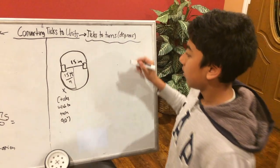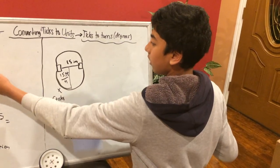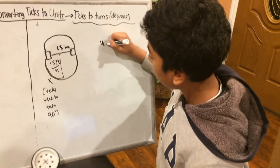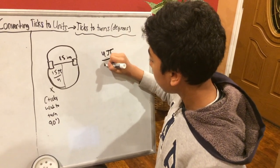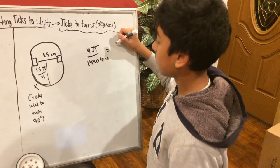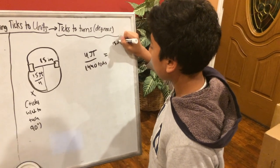So remember when we said over here, 4 pi over 1440 ticks. This information is going to be useful here. So you want to set up your equation like this.